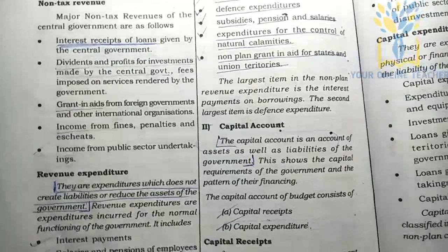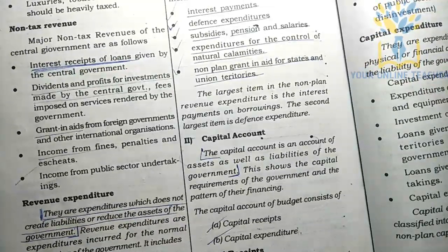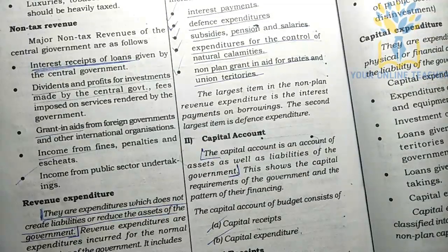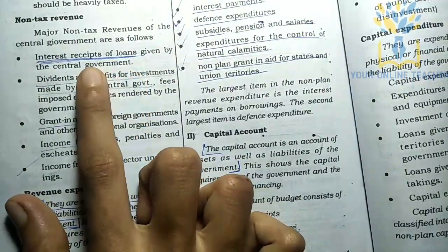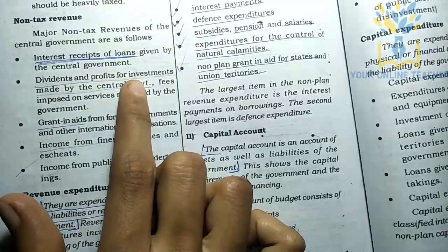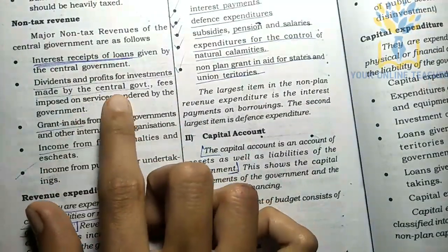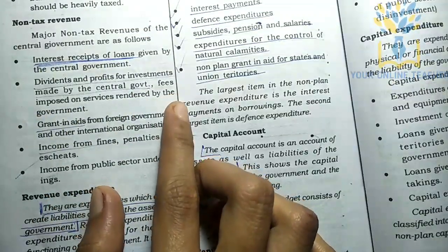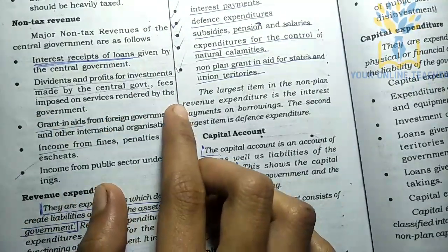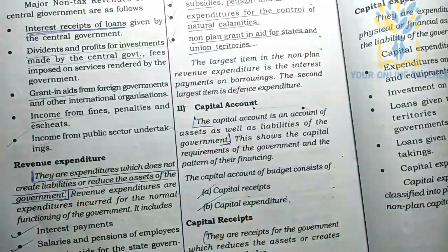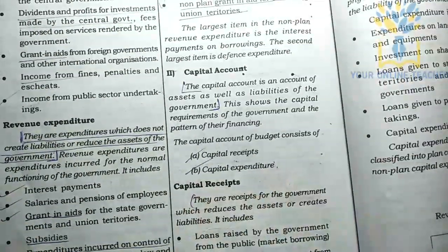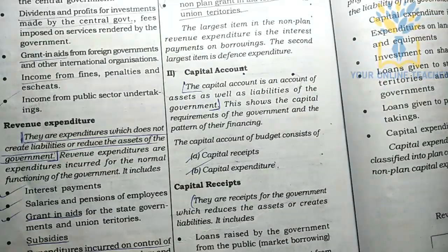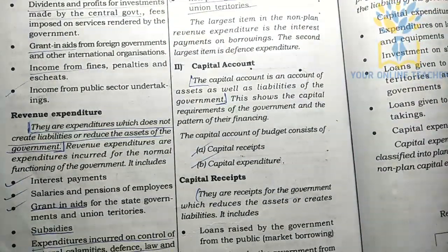Apart from tax revenue, the government also earns non-tax revenue. This includes interest on loans given by the central government, dividends and profits from investments made by the central government, fees for services rendered by the government, grants from foreign governments, fines and penalties, and income from public sector undertakings.